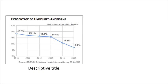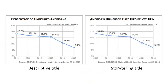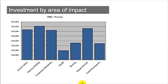Here's a quick example contrasting title types. A descriptive title — 'percentage of uninsured Americans' — is basically describing your axes. Compare that to 'America's uninsured rate dips below 10%' — there's a story, you're telling the audience what to focus on and creating interest. You can include the technical description as a subtitle or annotation. These two shouldn't be redundant. Another example: 'investment by area of impact' is descriptive but not very interesting — it lacks insight and leaves everything for your audience to figure out on their own.